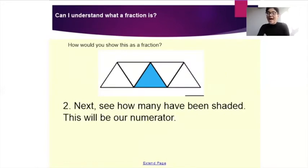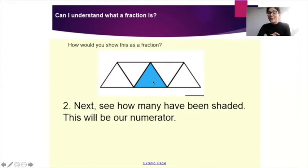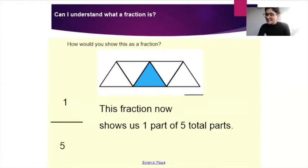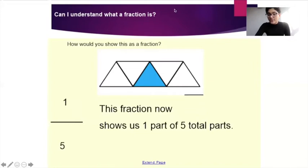Then we see how many have been shaded — this will be our numerator. How many triangles have been shaded? Just one. So the numerator would be one. So this fraction now shows us one part of five total parts. One triangle has been shaded — one out of five. So it is one out of five.